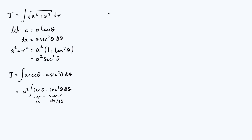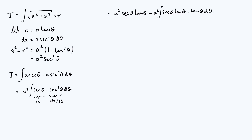Integrating by parts, we get a squared times [sec θ · tan θ] minus the integral of v · du/dθ. We still have the constant pre-factor a squared. The derivative of sec is sec times tan, so du/dθ is sec θ tan θ, and v is tan θ. So the integral term becomes the integral of sec θ · tan θ · tan θ dθ, which is sec θ · tan squared θ.